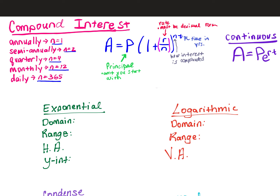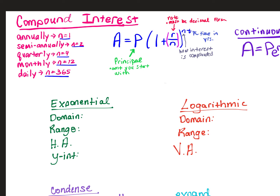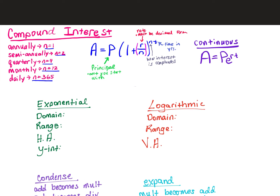The first thing we're going to start with is compound interest. With compound interest, you have two different formulas. You have A = P(1 + R/N)^(NT), and you also have A = Pe^(RT).